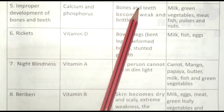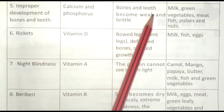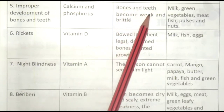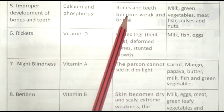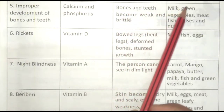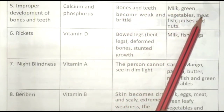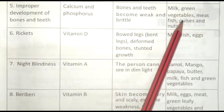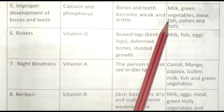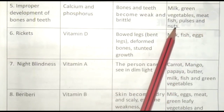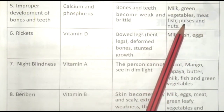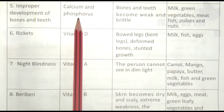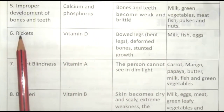Bones and teeth become weak and brittle — Haddiyaan aur dant kamzor aur bhangor ho jaate hain. Food sources to fulfill Calcium and Phosphorus deficiency: Milk, Green Vegetables, Meat, Fish, Pulses and Nuts — Doodh, Hari Sabziyan, Maans, Machli, Dalen aur Meva. In bhojan ko khane se Calcium aur Phosphorus ki kami poori ho jati hai.